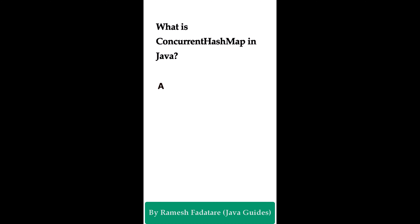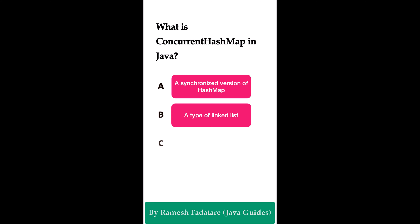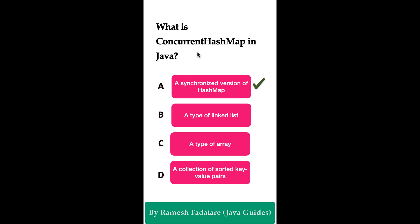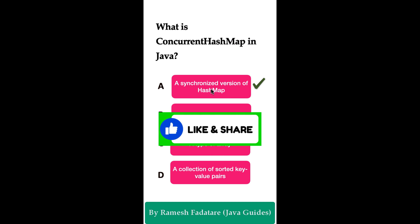What is ConcurrentHashMap in Java? Option A: a synchronized version of HashMap. Option B: a type of linked list. Option C: a type of array. Option D: a collection of sorted key-value pairs. The correct answer is option A. ConcurrentHashMap is a thread-safe variant of HashMap in Java, specifically designed for concurrent access by multiple threads. It allows multiple threads to read and modify the map simultaneously without corrupting the data — optimized for use in a concurrent environment.